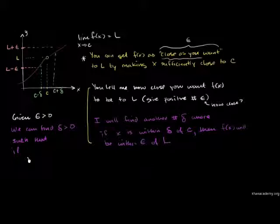We can find delta such that if the absolute value |x - c| is less than delta, then we can show that f of x approaches L within epsilon.